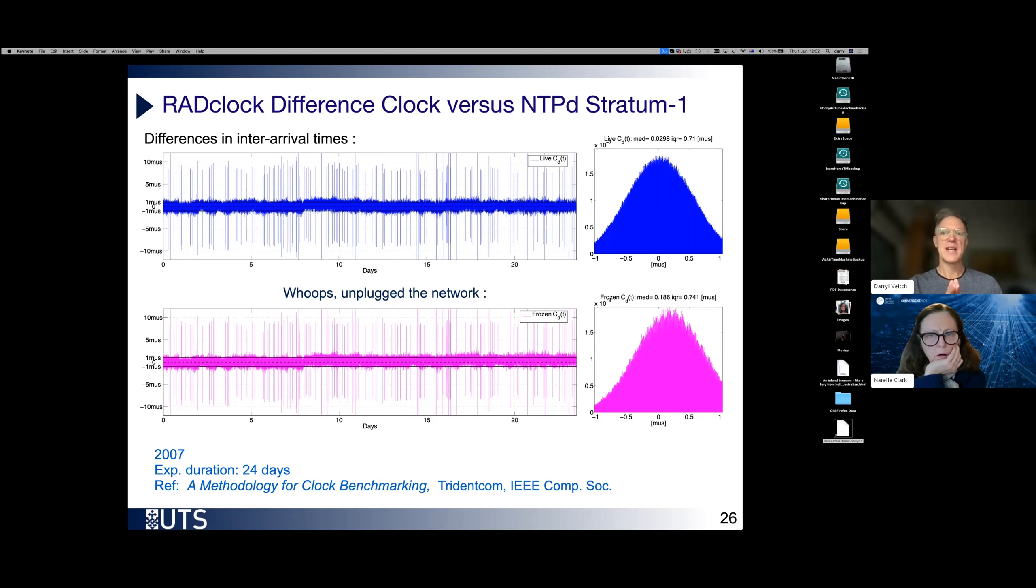From at the very beginning of the experiment, we've frozen the RADclock parameters, which is exactly what RADclock would do if in fact you had disconnected the network. It would simply not update the parameters. And you see that results are very little different. You can see it's hard to see in a time series. You can see a slight difference in the histogram on the right. So this illustrates the robustness of the difference clock.